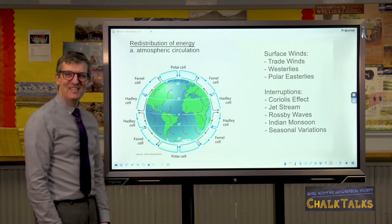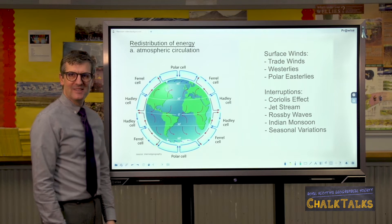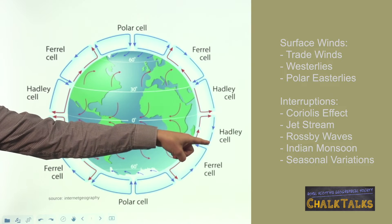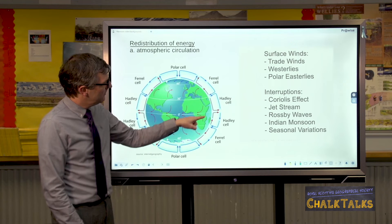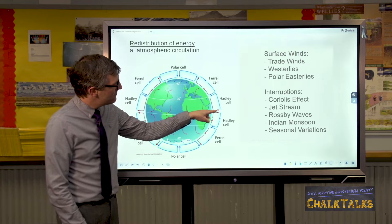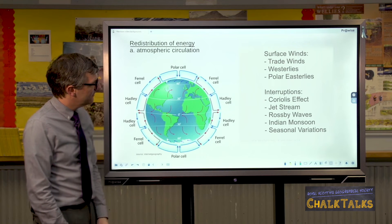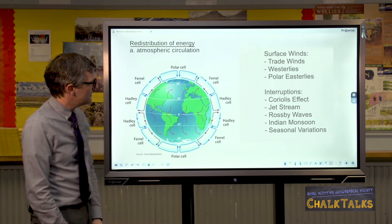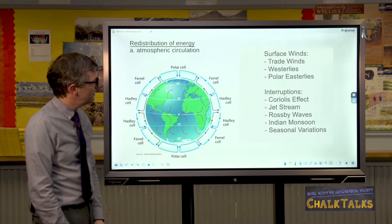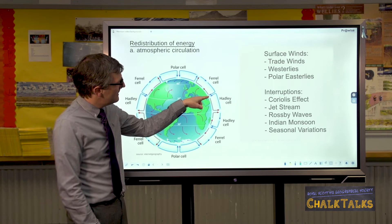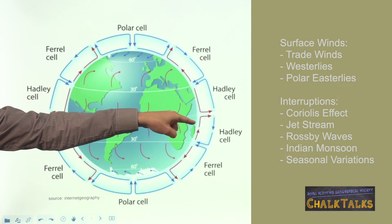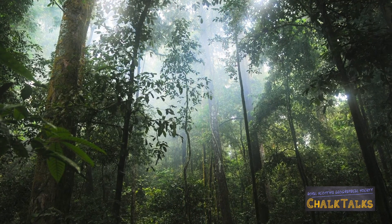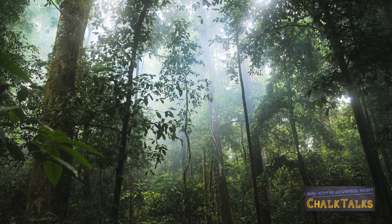The next section is the redistribution of energy. Starting with the atmosphere, you can see there's a three-cell model. First, let's look at the cells closest to the equator, known as Hadley cells. Starting at the equator, the hot air rises, leaving an area of low pressure. This then spreads out to the north and the south before sinking at about 30 degrees, creating an area of high pressure. There are then surface winds taking the air from the high pressure back to the low pressure at the equator, completing the Hadley cell. These variations in pressure at different latitudes have a profound effect on the weather and in turn on the land.